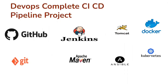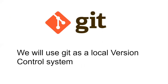The tools we will cover are Git and GitHub, Jenkins, Apache Tomcat, Ansible, Docker, and Kubernetes. We will use these tools to create a complete CI-CD pipeline. Let me introduce some of these tools.